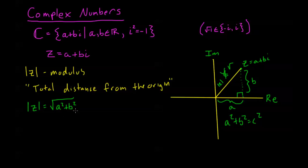Notice that I don't have any i's in here. The i kind of goes away because of the way this triangle works. I'm looking at the total distance — not the distance in reals and in imaginaries separately, but the total distance, or the shortest distance. And we know that that's just going to be a straight line from the point to my origin.